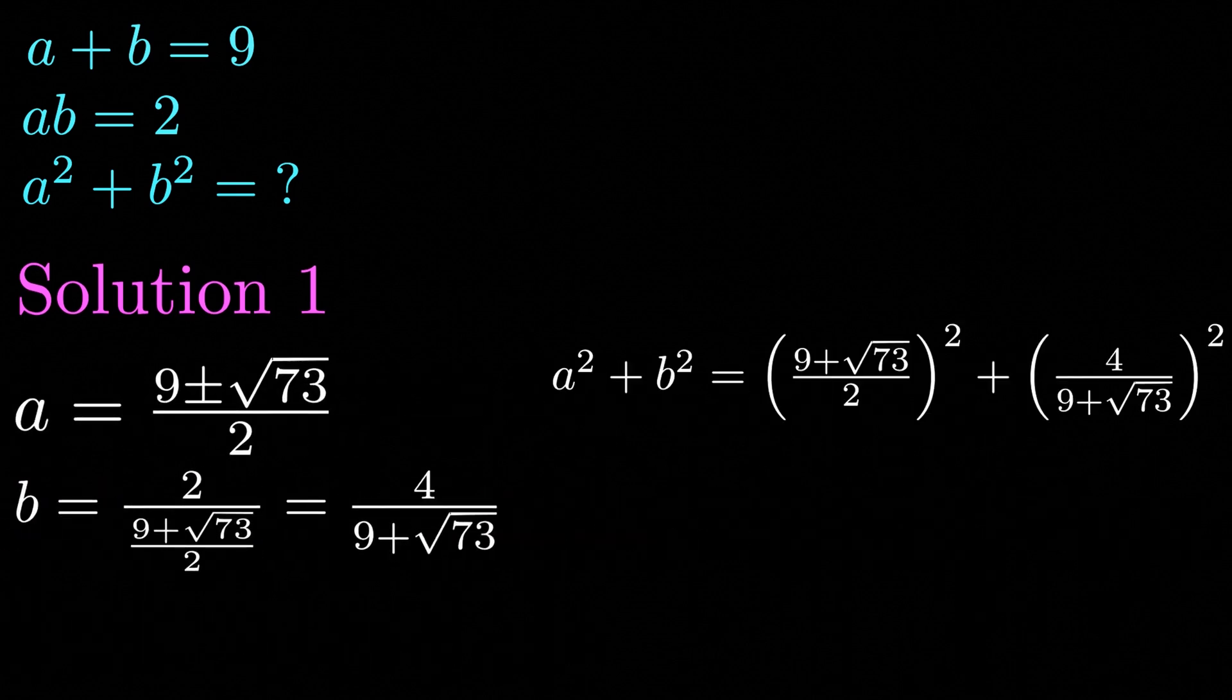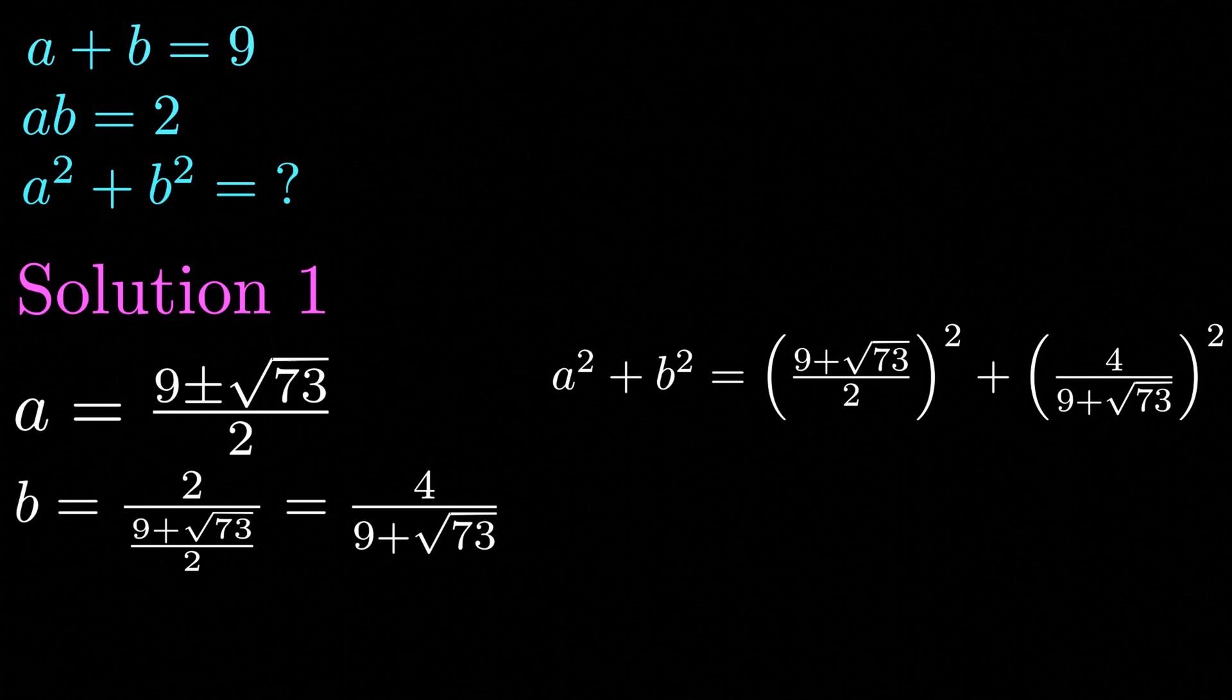Now all we need to do is substitute these values into our third equation a squared plus b squared. Doing so we get a final answer of 77 and that's it for solution one.